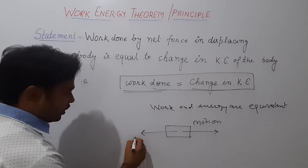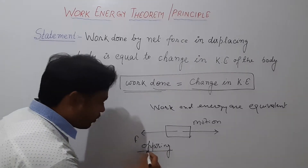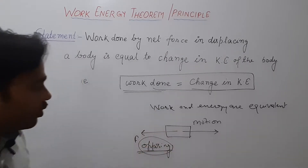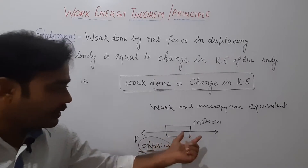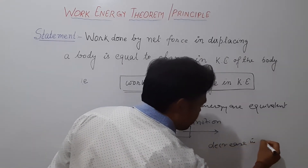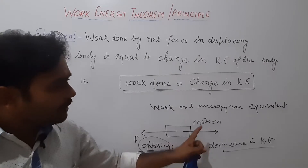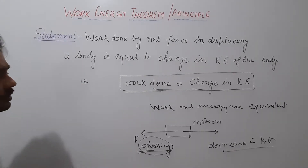We apply some opposing force on this object. Now again we are doing some work by this opposing force in stopping the body. If some work is done by this opposing force, then due to this opposing force there is a decrease in kinetic energy. The change in kinetic energy will again be equal to work done by this opposing force.